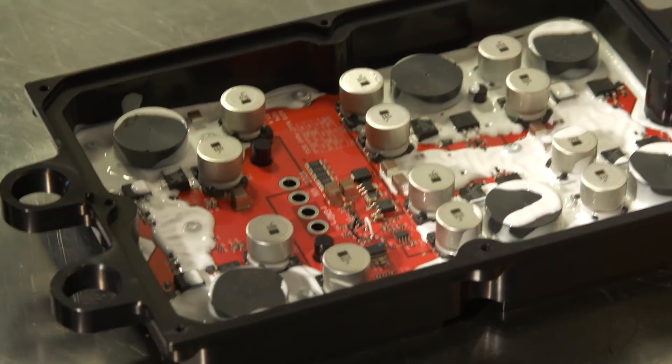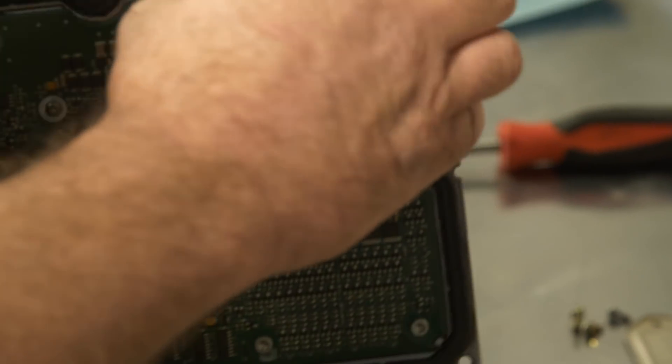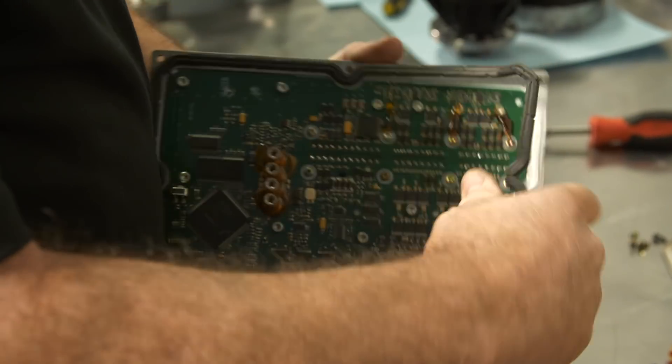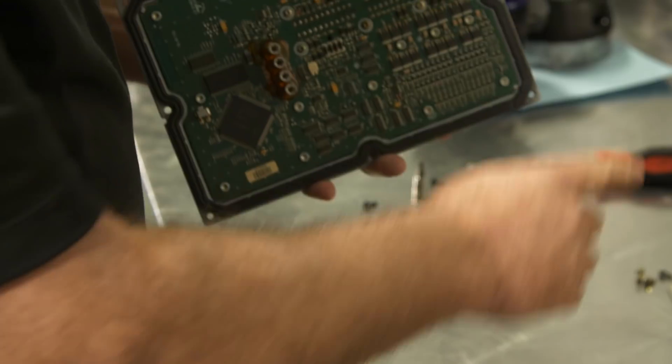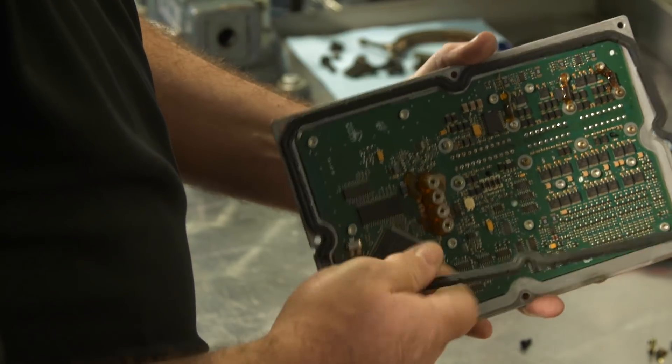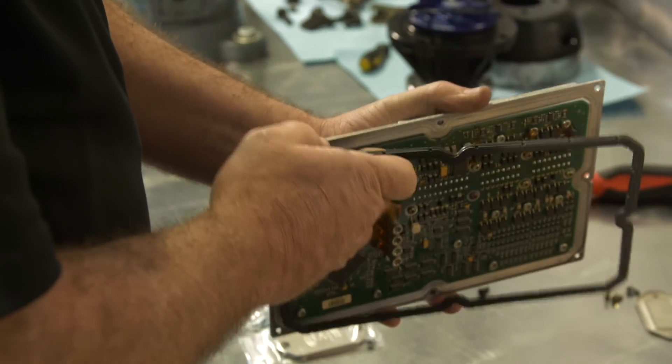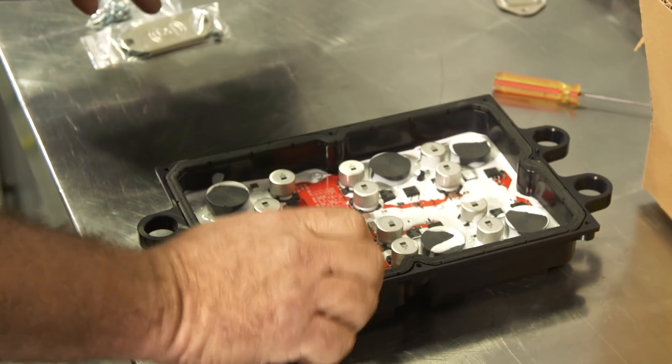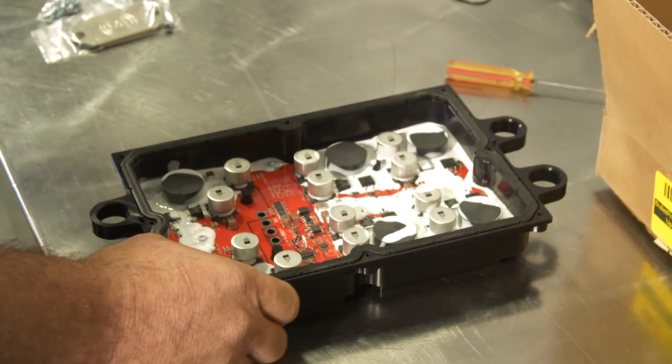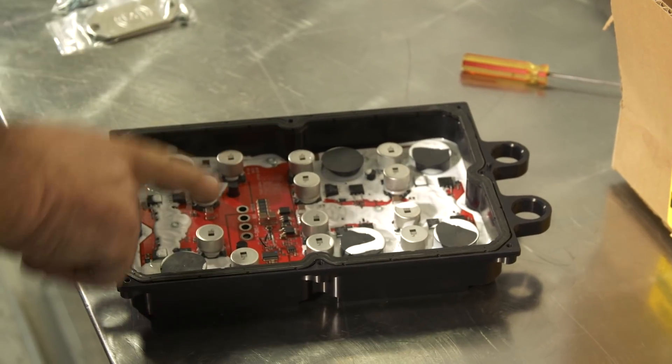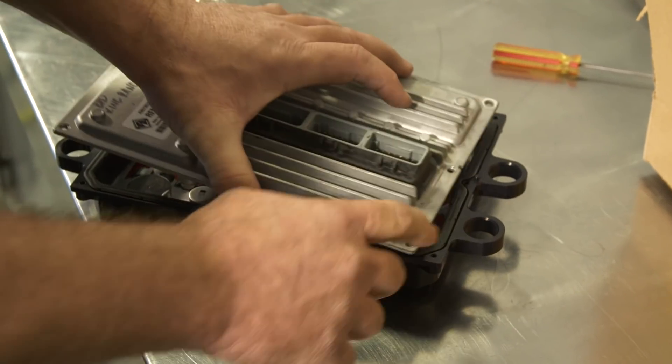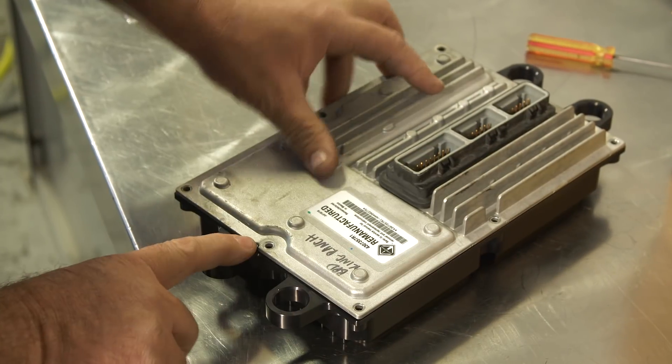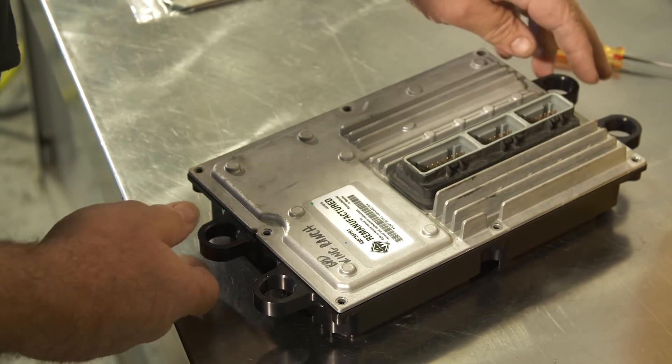We also want to ensure that the rubber gasket is still intact and on. In most cases, this will come off. Sometimes it will be attached to your old power supply. You just want to make sure that you've got it on and positioned correctly before you put the logic board on to the power supply. It fits down in the groove. Make sure that your pins are lined up with your pin holes here. And there are two alignment dowels, one here and one on this side, that will ensure that you get it on the right way.